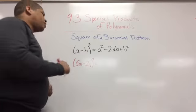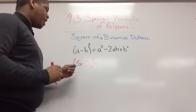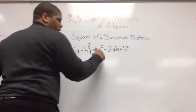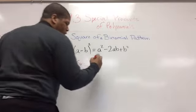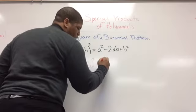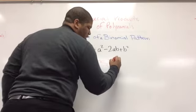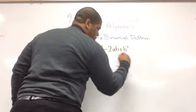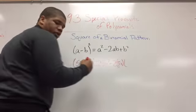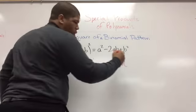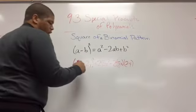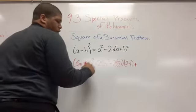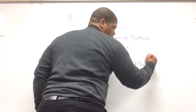For my example of (a - b) squared, I have (5x - 2y) squared. Here I'm going to do a squared — 5x squared gives me 25x squared — minus 2 times 5x times b, which is 2y. Notice I did not take my negative with me; I just brought over the 2y, plus 2y squared.